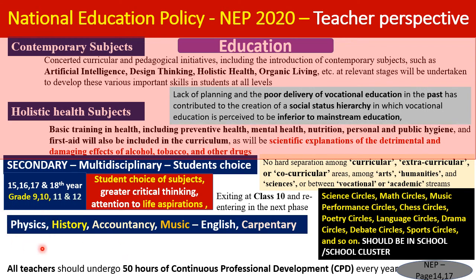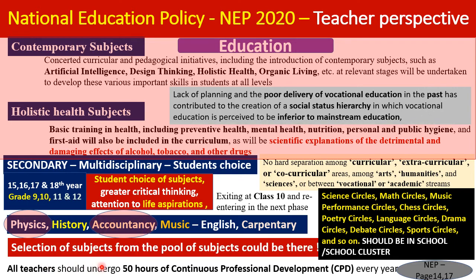However, certain subject combinations require prerequisites — physics requires mathematics; accountancy requires basic business studies. Proper guidelines must be provided so students understand which subjects need to be studied together or in sequence. A credit-based system with pools of subjects from arts, science, and commerce may be the solution.